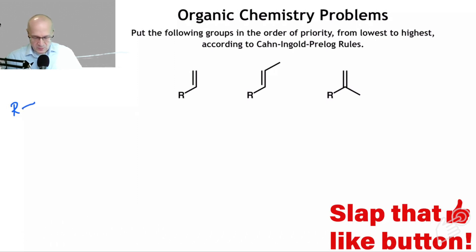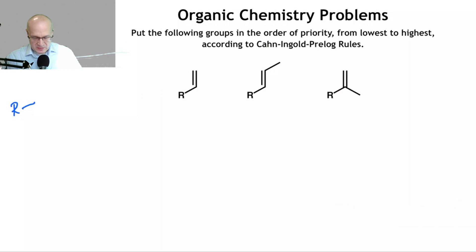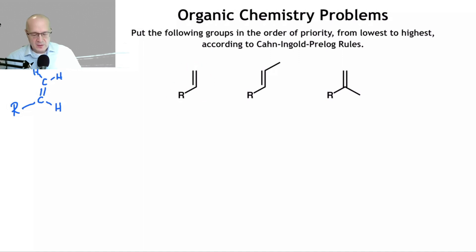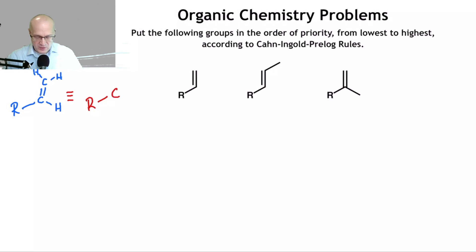So now we draw out the double bond like this. Cahn, Ingold, and Prelog say to consider the double bond to be represented in an expanded form. Here's the double bond we're working with. Cahn, Ingold, and Prelog say: consider this group as if it were this. It's not actually this — you're just considering it as if it were.